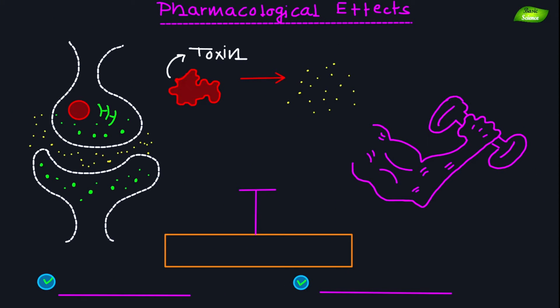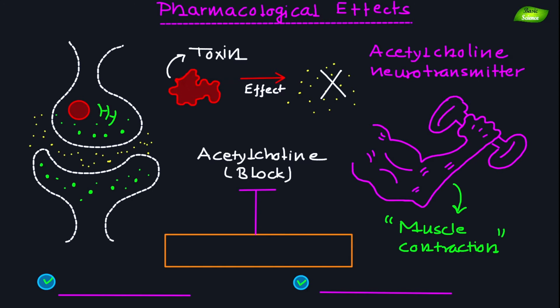Botulinum toxin exerts its pharmacological effect by blocking the release of acetylcholine, a neurotransmitter responsible for muscle contraction. By inhibiting acetylcholine release at the neuromuscular junction, botulinum toxin causes temporary muscle paralysis, which is the basis for its therapeutic and cosmetic applications.